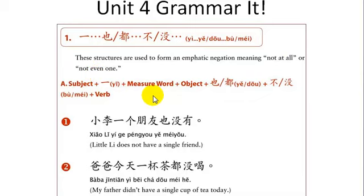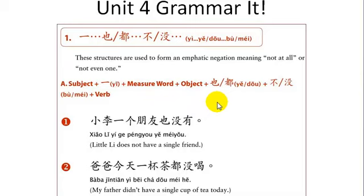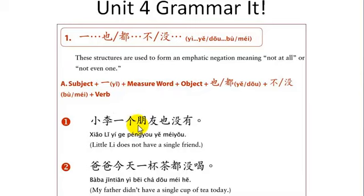So you have a subject, then 一, then a measure word, an object, then either 也 or 都, and 不 or 没, and then a verb. Let's just look right at these examples.